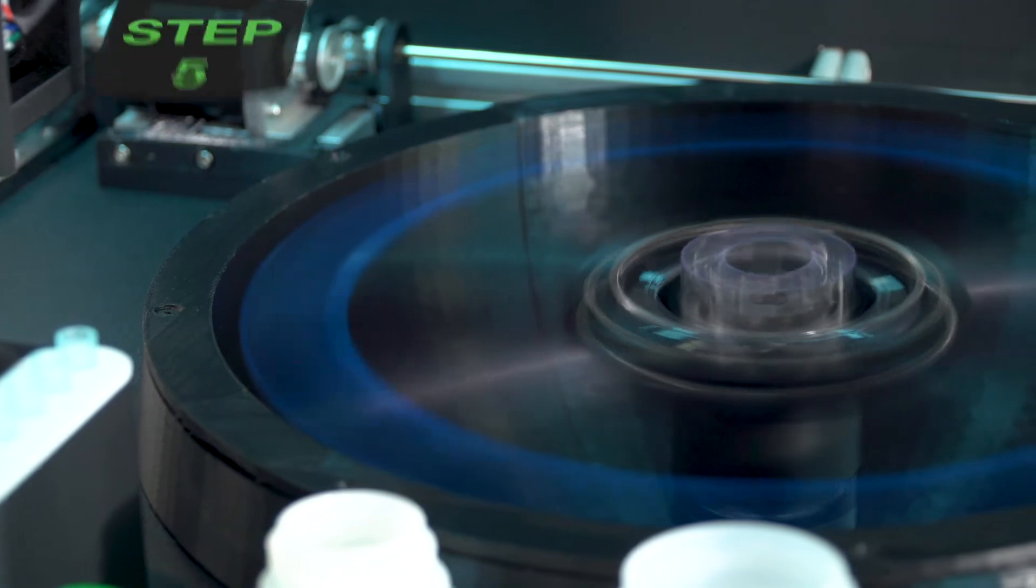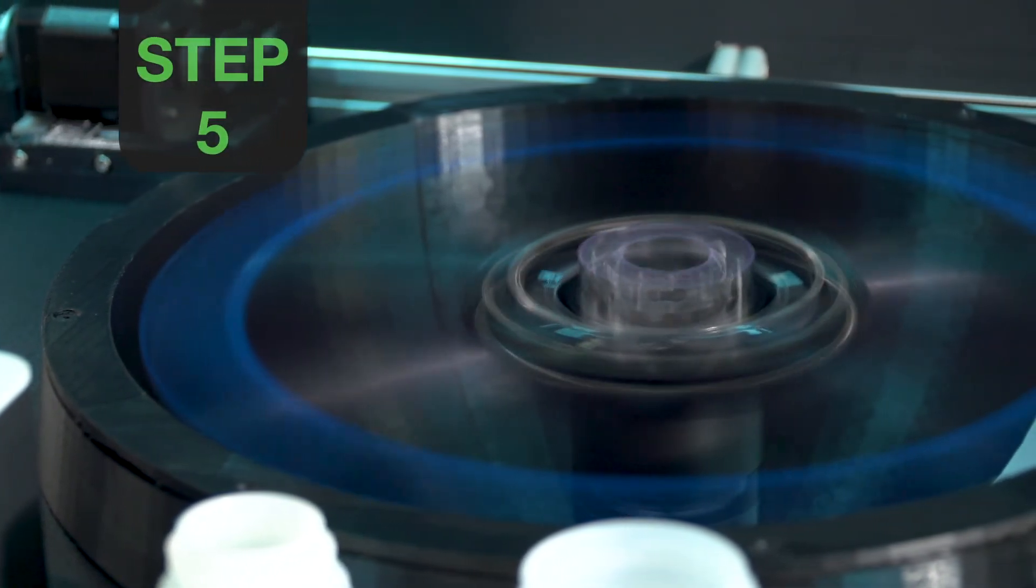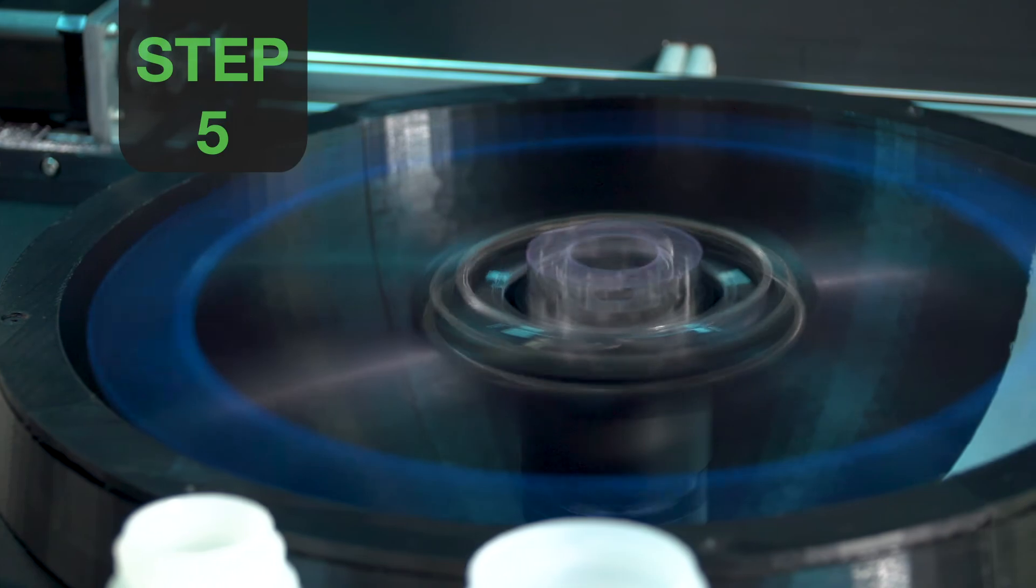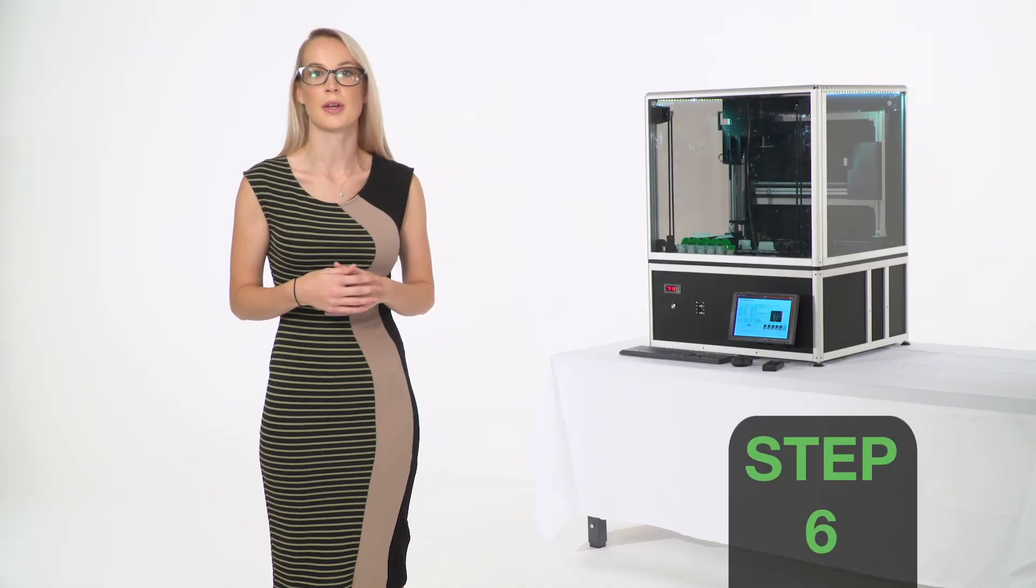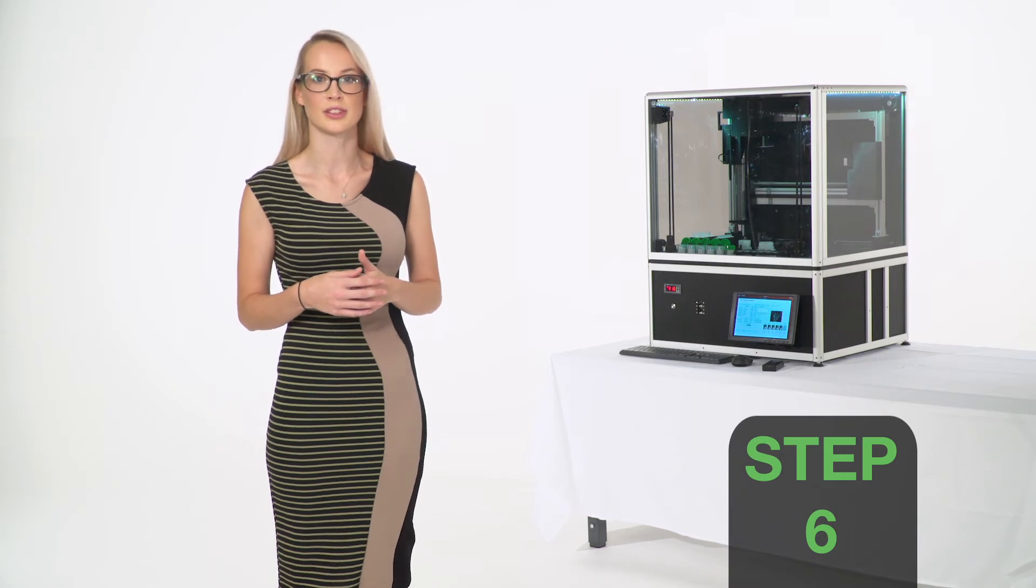The specimens are then centrifuged a second time at high speed to produce a well-formed cell pellet. The AutoLP Pro analyzes each specimen pellet and stores the information to be used during the processing.